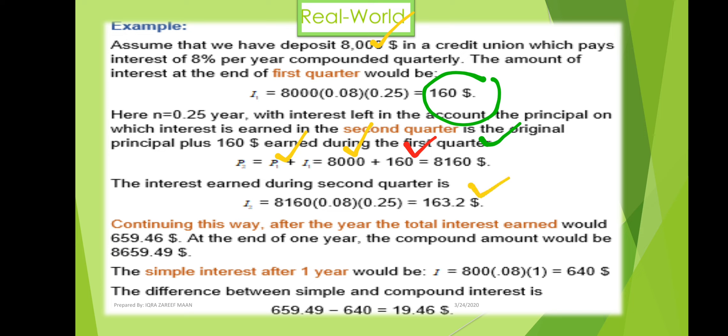Continuing this way for each quarter, after one full year the total interest amount is $658.46. The compound amount at the end of one year is found by adding the principal amount and the total interest earned after one year.